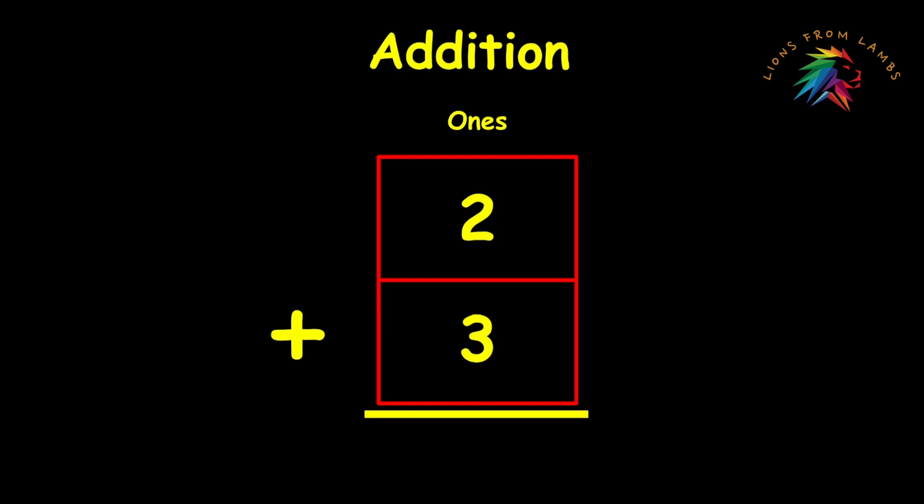First we're going to solve this problem using base 10 blocks. The two digit that is in the ones place converts to two units. The three digit will convert to three units. Remember both of these digits are in the ones place so their value is represented by unit blocks in base 10 blocks. So now it becomes very easy to solve this particular problem with base 10 blocks because we just need to count the blocks and if we count the units one two three four five we have five units.